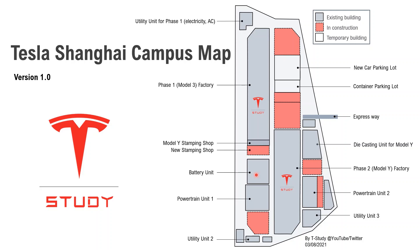The next one is the battery unit. This one is powertrain unit one. And the last one on the west side is utility unit two — it supports nearby factories. This is the parking lot for new cars, Model 3 and Model Y. And this is the parking lot for containers, transporting parts from other campuses here. This parking lot is actually being moved to the west side of the campus because construction work is about to extend to that location.